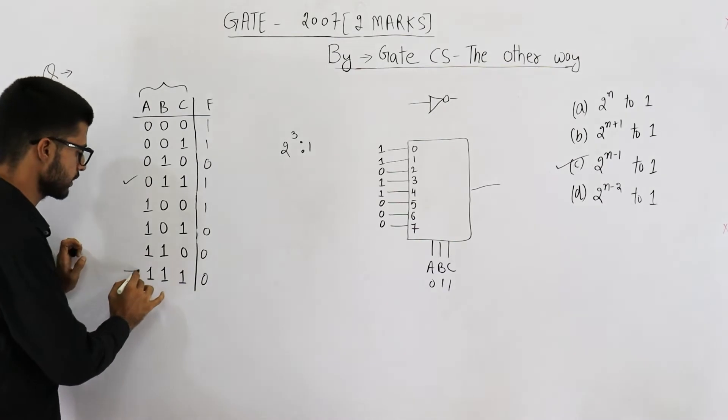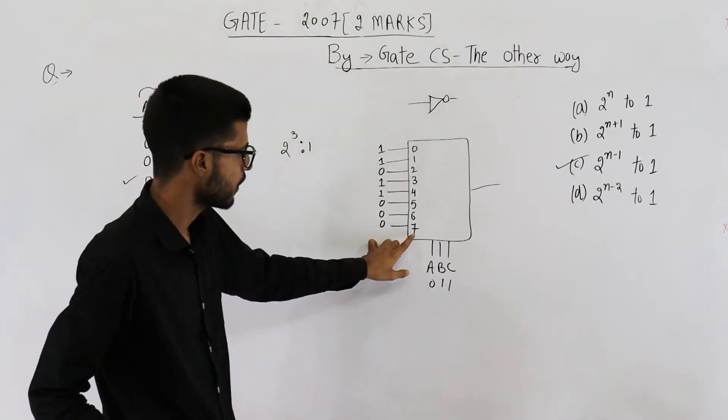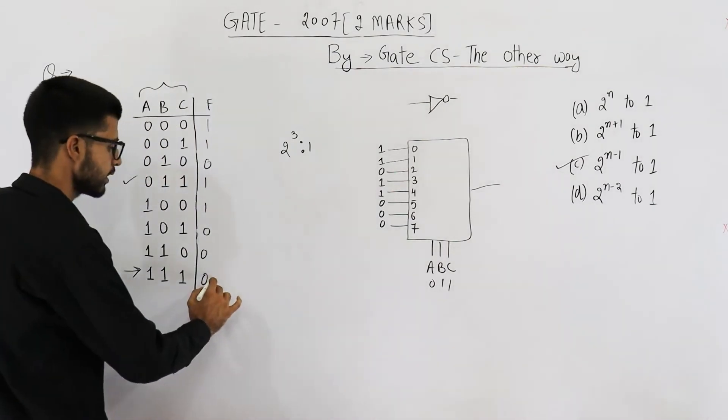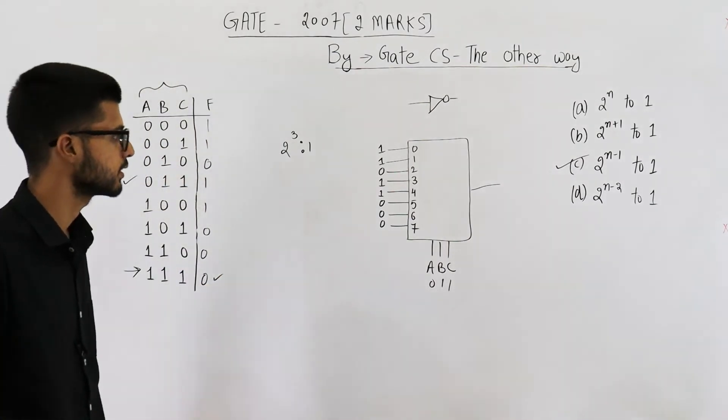Similarly for seven that is all ones. All ones we have connected zero. So zero will be the output. That is what was required. So this function is implemented.